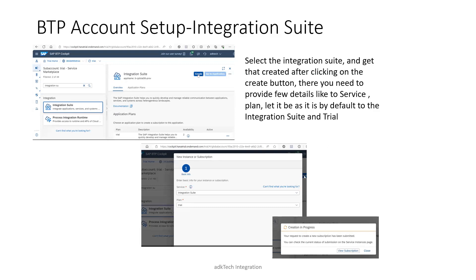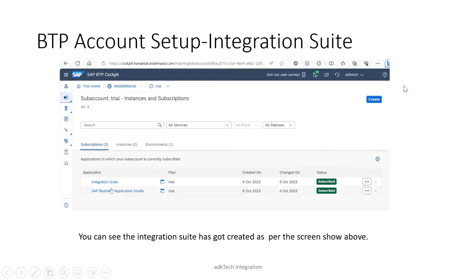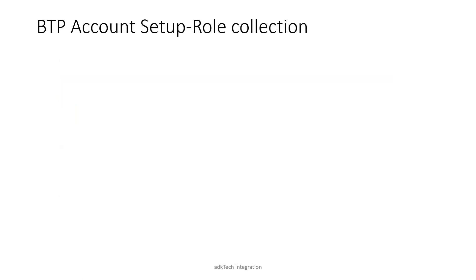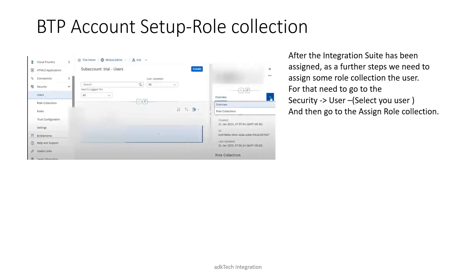The creation process has started. After you click Submit, you will see a screen where the Integration Suite and Business Application Studio are already subscribed. Now we need to assign some role collections. Go into the left panel, under Security, go to Users. Once you are in Users, select your user account — it will likely be your mail ID.